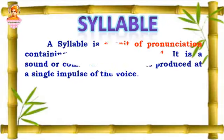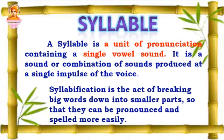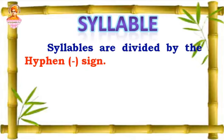What is a syllable? A syllable is a unit of pronunciation containing a single vowel sound. In other words, it is a sound or combination of sounds produced at a single impulse of the voice. The unit given to the vowel sound while pronouncing a word is called a syllable. Syllabification is the act of breaking down big words into smaller parts so that they can be pronounced and spelled out more easily. While breaking a word into smaller parts, we should use a hyphen. Syllables are divided by the hyphen sign.